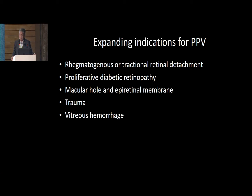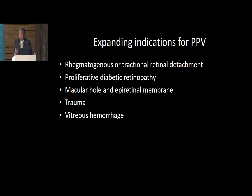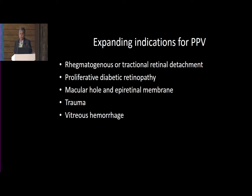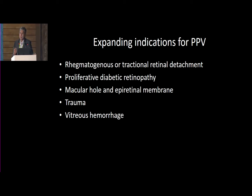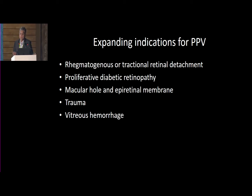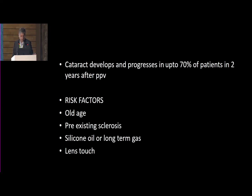There are expanding indications for pars plana vitrectomy. Previously, before 23, 25, and 27-gauge vitrectomy came up, we would be scared doing a vitrectomy. Today, for almost every patient with a rhegmatogenous retinal detachment, I would do a vitrectomy as a procedure of choice. PDRs we have begun tackling much earlier — macular holes and epiretinal membranes, trauma, or vitreous hemorrhage.